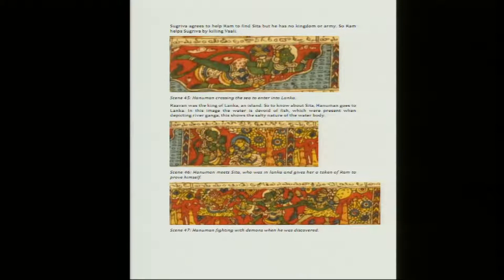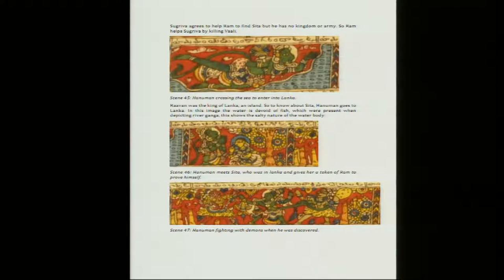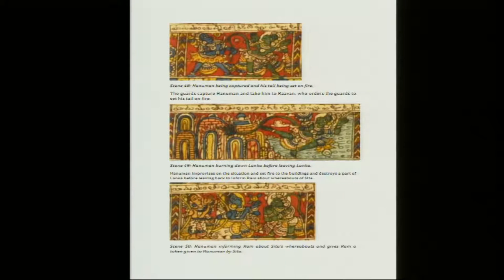In scene 46, Hanuman meets Sita who was in Lanka and gives her the token of Ram to prove himself — he is showing the ring to Sita so that Sita trusts him. Hanuman fights with demons when he is discovered in Lanka. Then in scene 48 we see Hanuman being captured and his tail being set on fire — the guards capture Hanuman and take him to Ravan, who orders the guards to set his tail on fire.